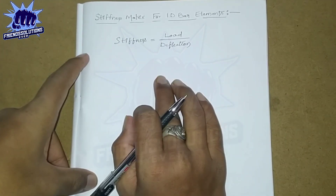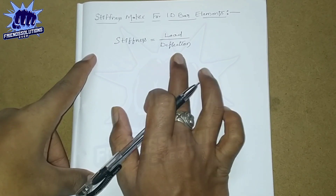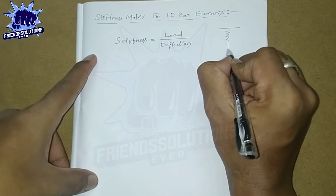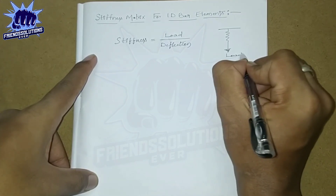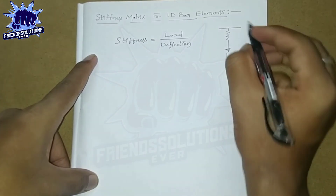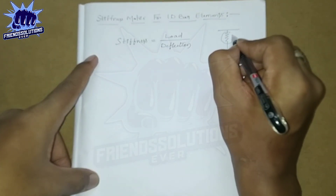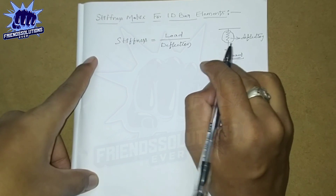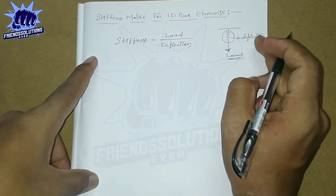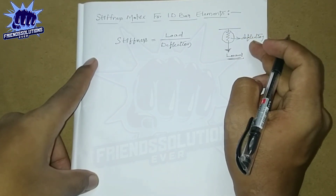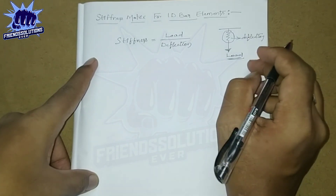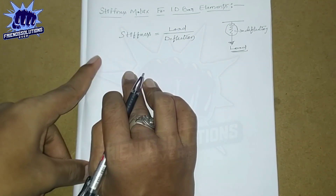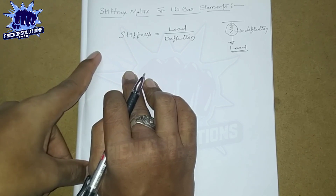Before going to the topic I have some fundamentals to cover. I will explain how this formula arrives. Consider a spring having some load. After applying a load on the spring it undergoes some deflection — that relationship is nothing but stiffness. I hope you understand what I said. Now I am starting my derivation of the stiffness matrix for 1D bar elements.